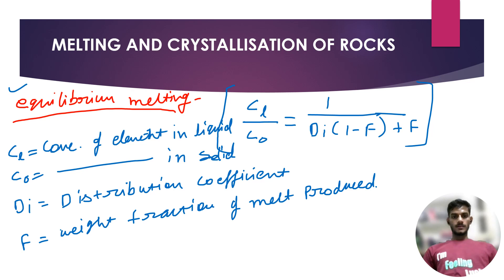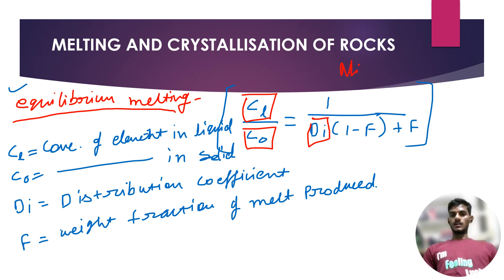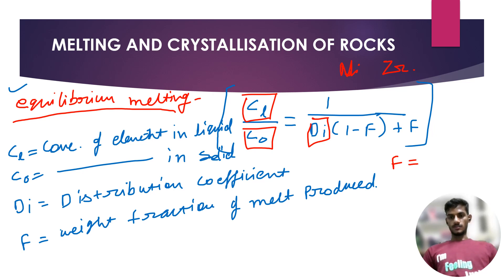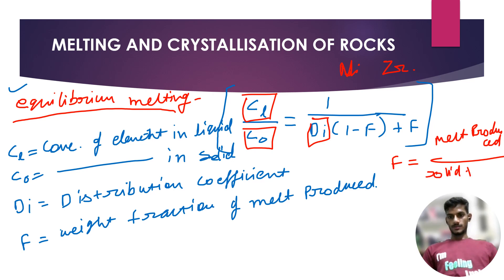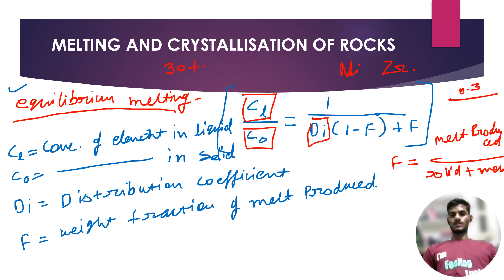CO describes the concentration of the element in the original rock, or solid. D is the distribution coefficient — a fixed value for each element; for example, nickel has a particular value and zircon has a particular value. F is the weight fraction of melt produced, calculated as: F equals melt produced divided by (solid plus melt). For example, if melting happened 30%, then melt produced is 0.3, solid plus melt equals 1, so F equals 0.3.